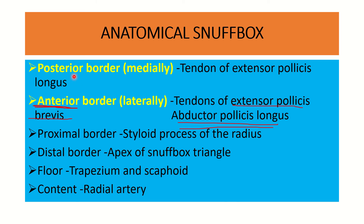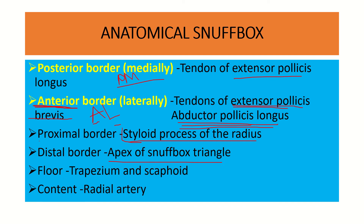To summarize: the posterior medial boundary is formed by the tendon of extensor pollicis longus. The anterolateral boundary is formed by extensor pollicis brevis and abductor pollicis longus. The proximal border is the styloid process of the radius. The distal border is the apex of the snuffbox — the meeting point of the three tendons: extensor pollicis longus, extensor pollicis brevis, and abductor pollicis longus. The floor is formed by the trapezium and the scaphoid, and the content is the radial artery.